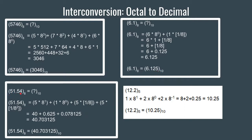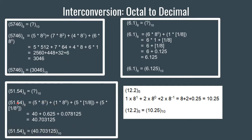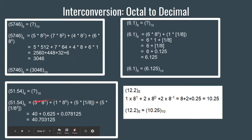In this example we have 51.54 in octal. The positional weight of 1 is 0 and of 5 is 1. For the fractional digits: 5 into 8 to the power minus 1, plus 4 into 8 to the power minus 2, which is 5 into 1/8 plus 4 into 1/64. Upon calculating, we have 40 plus 0.625 plus 0.078125. Summing up, we get 40.703125 as the decimal equivalent of 51.54 octal.